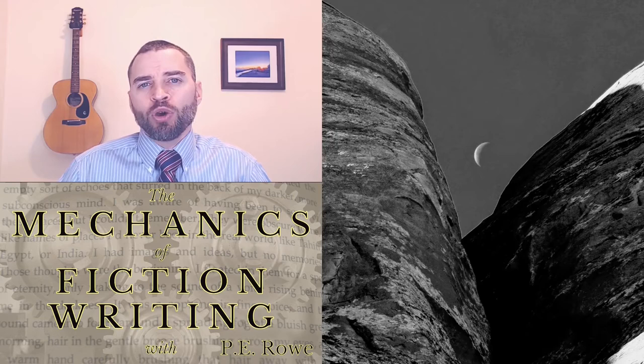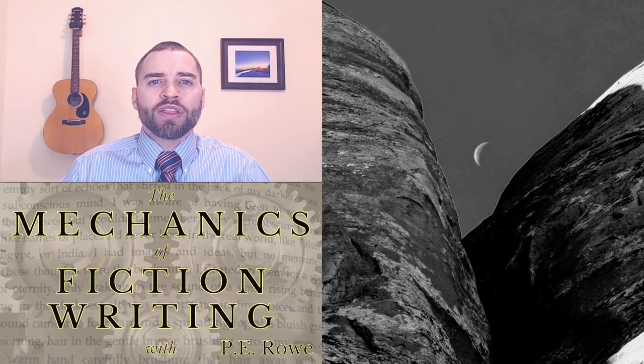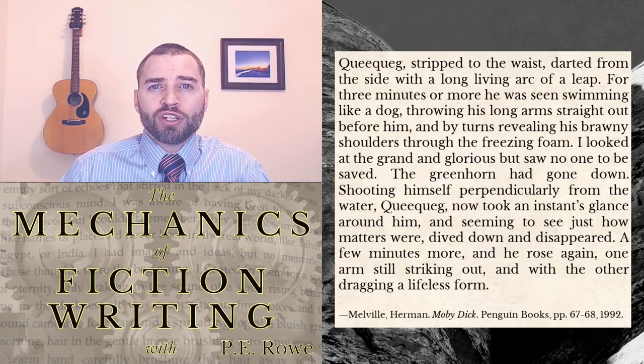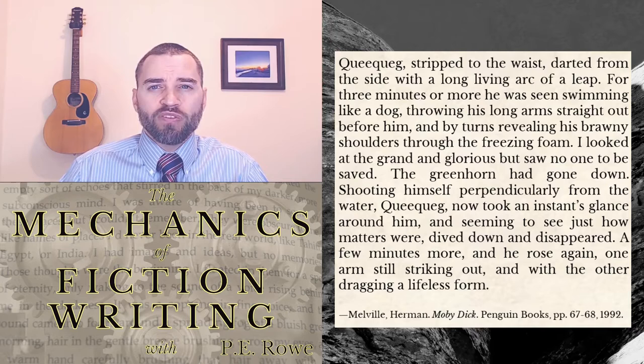There's a scene early on in Moby Dick when Ishmael, the narrator, and his Polynesian companion Queequeg are on the deck of a ferry heading to meet their whaling ship in Nantucket. The boom gets loose, sweeping overboard a young man who had previously been harassing Queequeg for his appearance. Then this happens — watch Melville do work. Queequeg, stripped to the waist, darted from the side with a long living arc of a leap. For three minutes or more he was seen swimming like a dog, throwing his long arms straight out before him, and by turns revealing his brawny shoulders through the freezing foam.